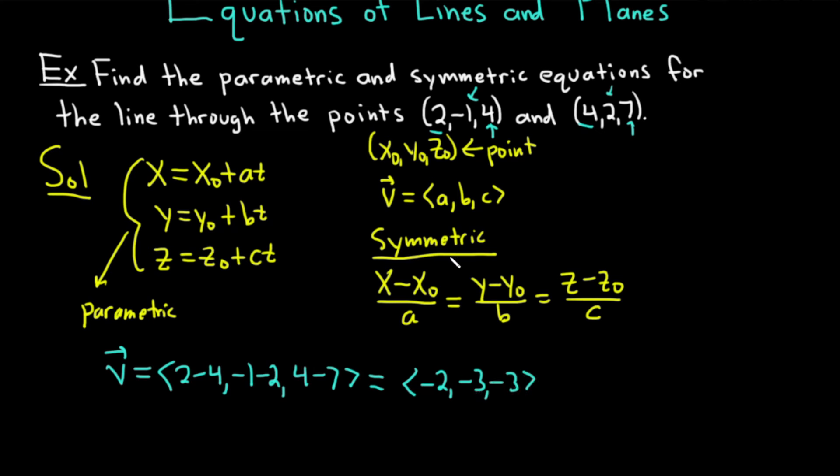All right. So now we have our a, b, and c. So a is going to be -2, b is -3, and c is -3. For our x₀, y₀, and z₀, let's take our first point.